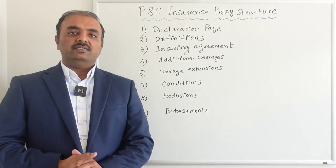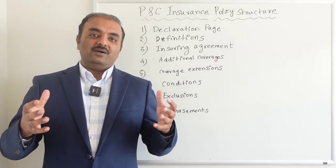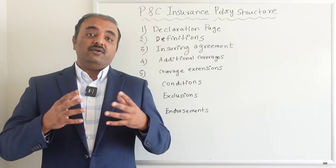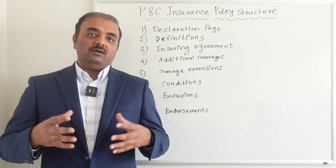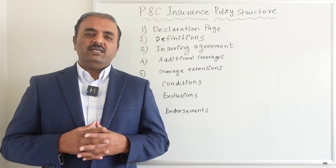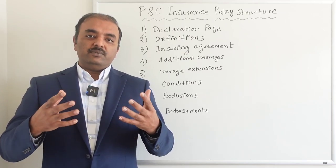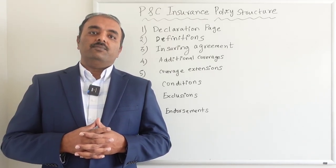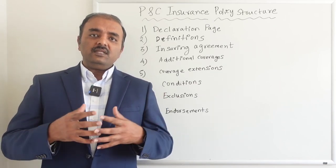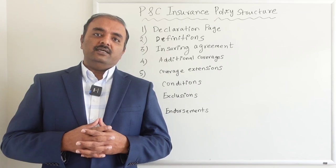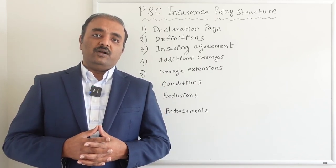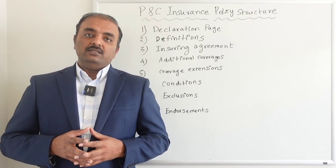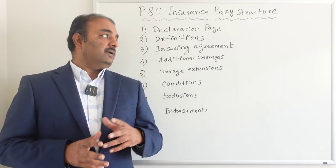The third one is the insuring agreement, which is the essence of the contract. It elaborates on the coverage form — what the causes of loss are, whether basic, broad, or special — and it's essentially the promise that the insurance company is giving to the insured. For homeowners, it will say what properties are covered, what additional coverages are provided, and the causes of loss. Sometimes policies have a special cause of loss, meaning anything is covered except what is excluded, so you need to pay close attention to the insuring agreement.